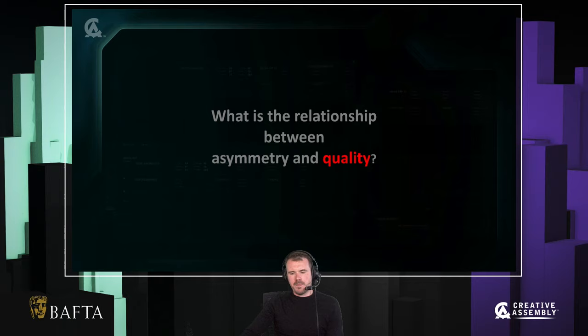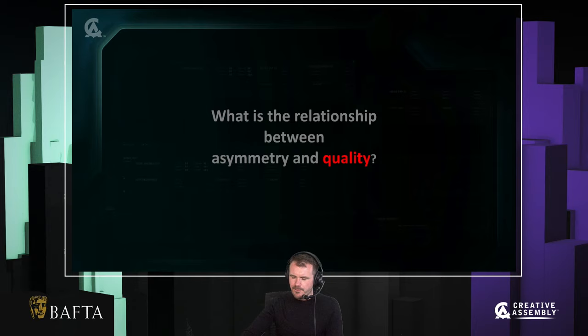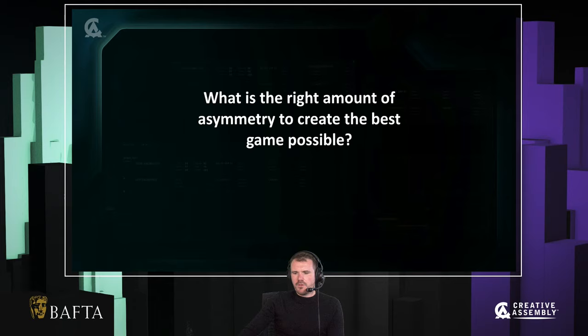Let's talk about quality. Quality is kind of whatever you want it to be — how cool your game is, how good it is, how fun it is. You might even use metrics like Metacritic or how many players you have. It's however you want to define quality. And obviously, as the developer, you're working every day to make quality the best it can be. So given that, what is the right amount of asymmetry to create the best game possible?